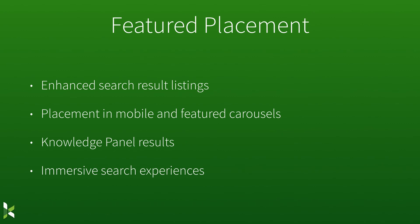So what does featured placement look like? We're talking about those enhanced search result listings. If you are looking especially on your mobile devices at search results, you'll see carousels of results. Also the knowledge panel that Google provides — which lies on that right-hand sidebar — has information about an organization or a concept or a band. And then these immersive search experiences, which are interesting tools that Google is trying to provide within the search context, end up being a way that users are interacting with your brand before they ever get to your site.